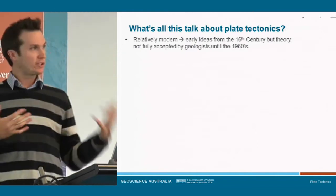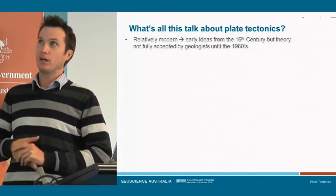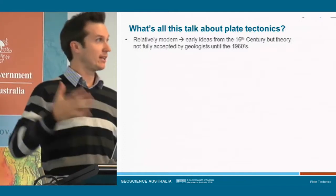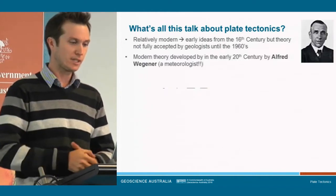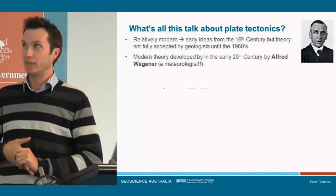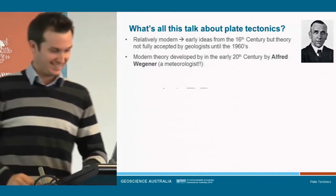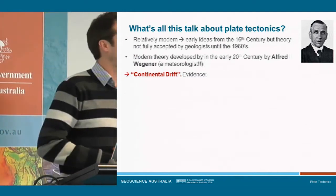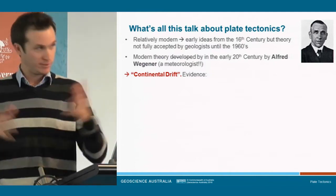So what's the big deal about plate tectonics? Why is it important, and how did it come to be the major theory underpinning a lot of Earth processes? The surprising thing is that it's a relatively modern idea. There were some early ideas from the 16th century about how continents moved around, but it wasn't really fully accepted by geologists and the wider scientific community until the early 1960s. The modern theory was developed in the early 20th century by Alfred Wegener, who was not a geologist — he was a meteorologist. He condensed and formulated a lot of evidence into a theory called continental drift, which was the early precursor to what we now call plate tectonics.